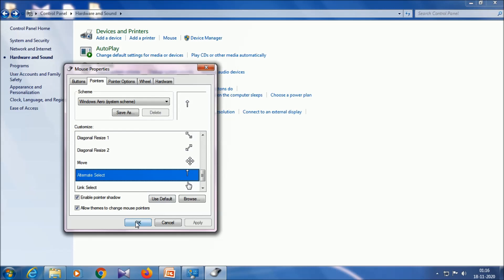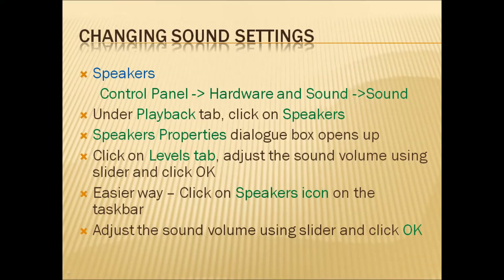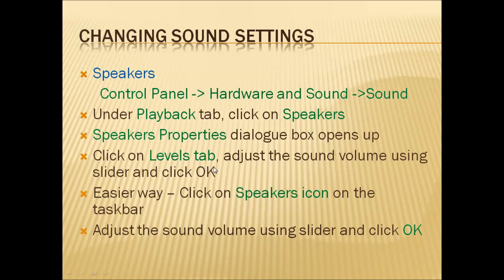Now we are going to see how to change the sound settings. For the speakers: go to control panel, then 'Hardware and Sound', then click on Sound. Under the Playback tab, go to Speakers, then the Speakers Properties dialog box will open. Under the Levels tab, adjust the sound volume using the slider, then click OK. An easier way is to click the speaker icon in the taskbar and adjust the volume there.